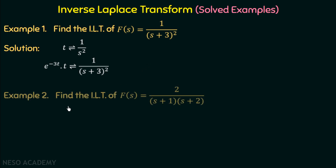Now we move to Example 2: find the inverse Laplace transform of f(s) equal to 2 over (s+1)(s+2). There are two factors multiplied in the denominator, making it difficult to find the inverse Laplace transform directly. But if we split these two factors into two different fractions using partial fractions, we can easily calculate it. Before applying partial fractions, we need to confirm this is a proper fraction.